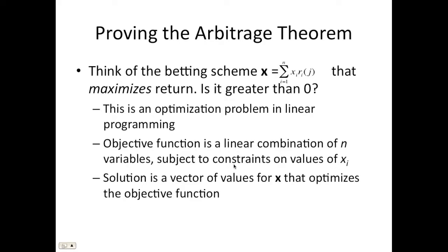The full proof won't be given here, but an outline: if you consider a betting scheme that maximizes the return function, you ask whether that maximum exceeds zero — if so, arbitrage exists. This is essentially a linear optimization problem. The proof comes out of linear programming. The objective function is what we're trying to maximize, subject to constraints on the values of x. We rely on the duality principle of linear programming, which says any optimization problem can be viewed as either the original primal problem or an equivalent dual problem.